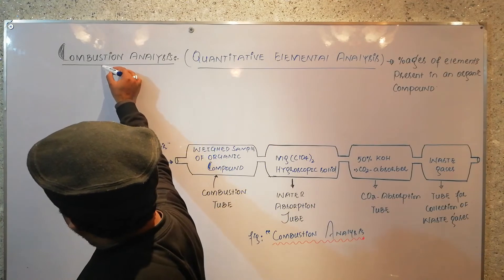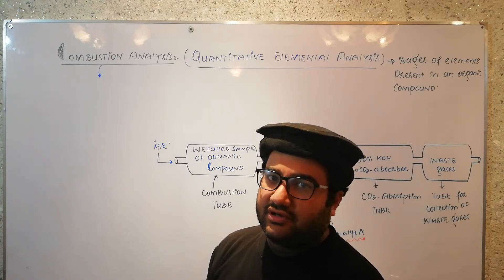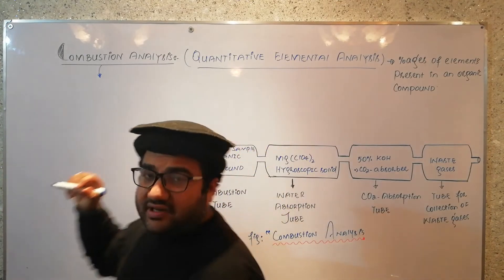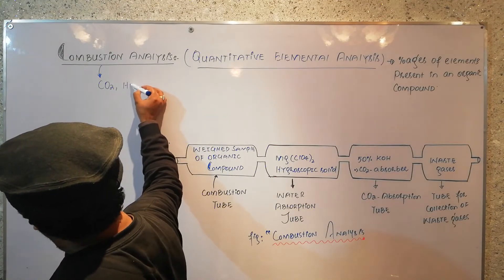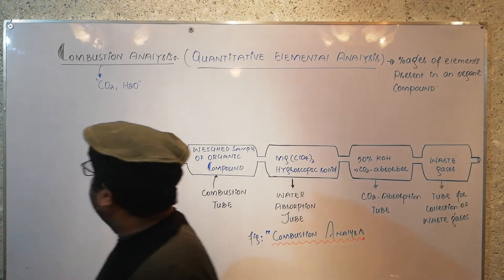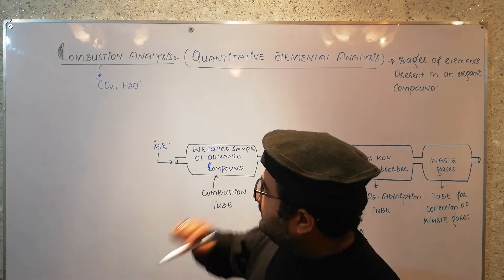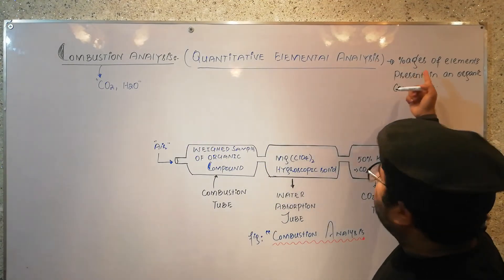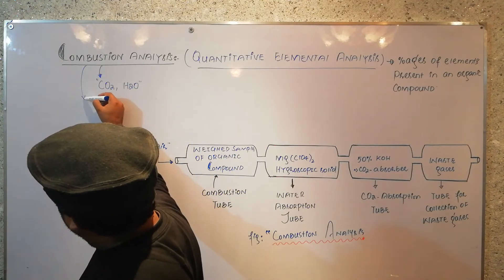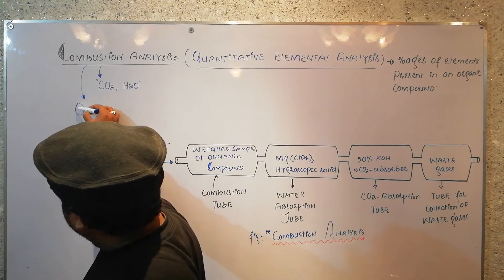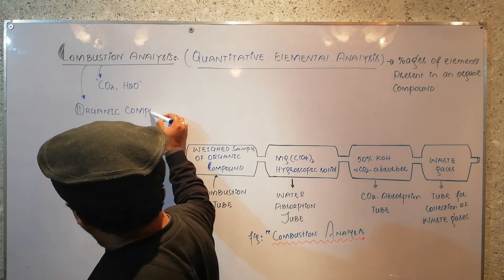What does combustion mean? Combustion means the burning of an organic compound in excess supply of oxygen or air. Whenever any organic compound is combusted, we get two major products: one is carbon dioxide and the second one is water vapors. Combustion analysis is quantitative analysis used to determine the percentages of elements, and it is only used for the analysis of organic compounds.